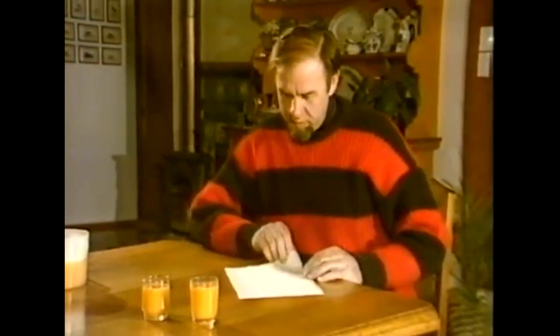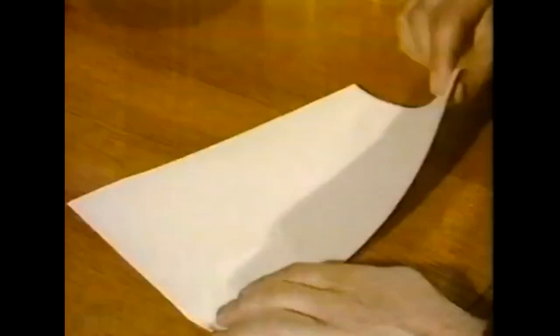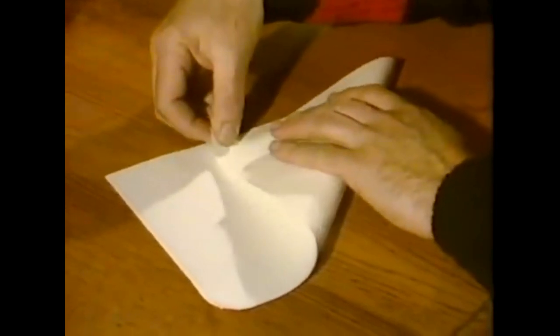You can make a very good little emergency cup that will work for quite a while out of a piece of paper. Nothing but. First of all, make sure it's not paper that's got any chemicals in it. Ordinary writing paper's fine. I think we'll get it to a square by taking this corner and folding it over to that side there.